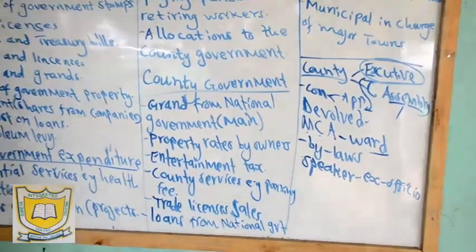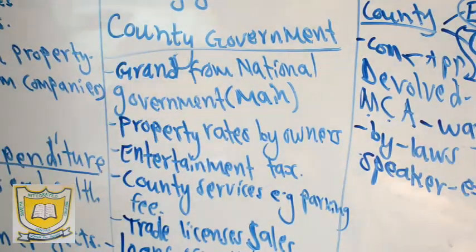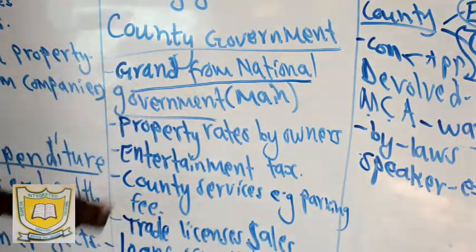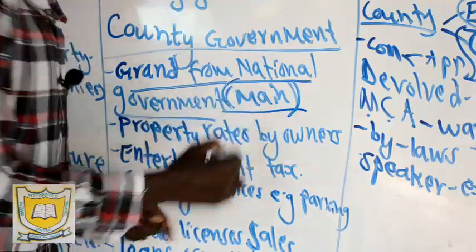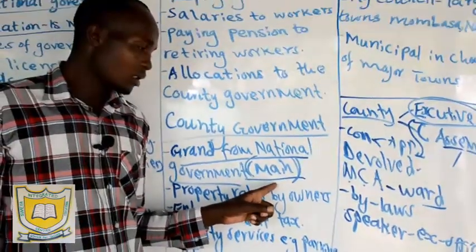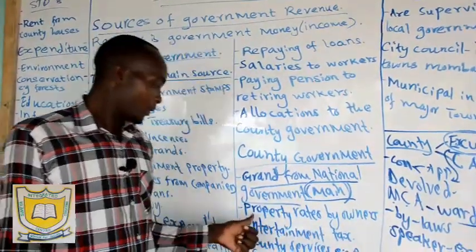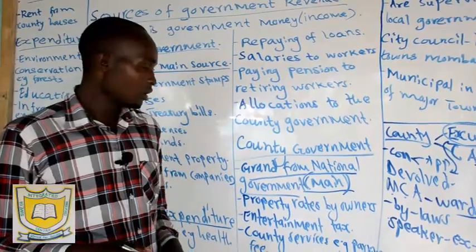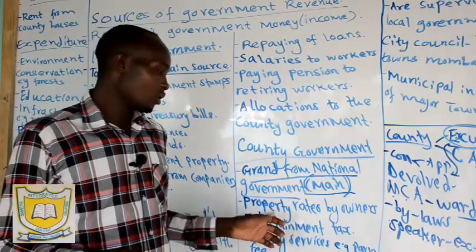After knowing what a county is, we want to look at county government revenue — how does the county government get money? Number one: grants from the national government. This is the main source of county government revenue — money allocated during budgeting in the National Assembly. Number two: property rates paid by property owners in the county. They normally pay some money to the county government to make sure county projects are going on.